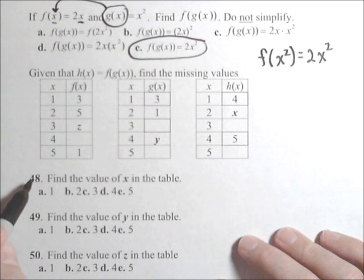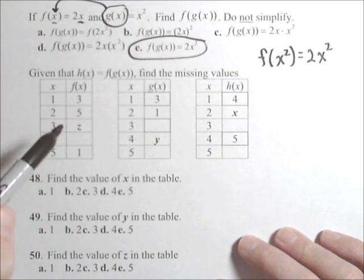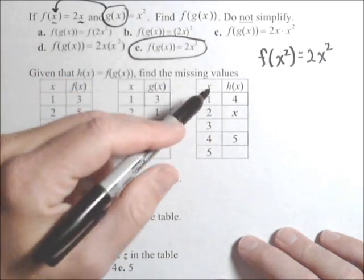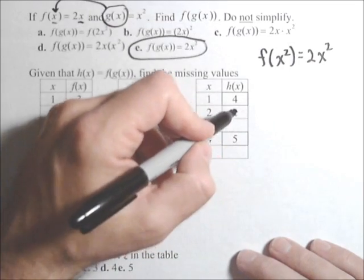Next one we have three tables, and we have to find some values based on the fact that h of x is f of g of x. The first value we've got to find is x.